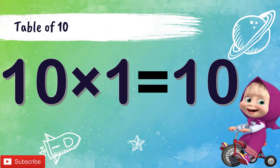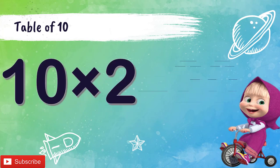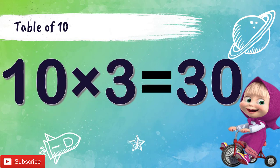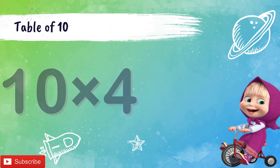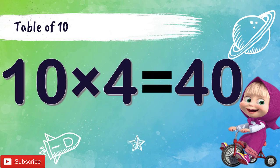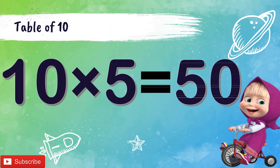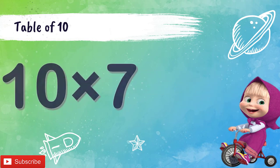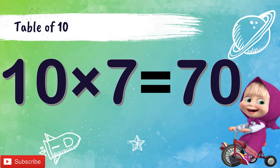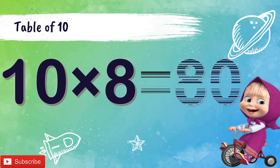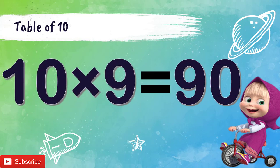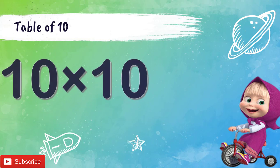Table of 10: 10 1's are 10, 10 2's are 20, 10 3's are 30, 10 4's are 40, 10 5's are 50, 10 6's are 60, 10 7's are 70, 10 8's are 80, 10 9's are 90, 10 10's are 100.